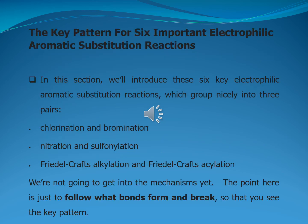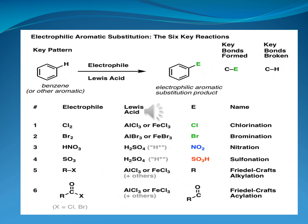Let's see the key pattern for six important electrophilic aromatic substitution reactions. We will introduce these six key EAS reactions, which group nicely into three pairs: chlorination and bromination, nitration and sulfonation, and Friedel-Crafts alkylation and Friedel-Crafts acylation. We are not going to get into the mechanism here yet — the point is just to follow what bonds form and break, so that you see the key pattern of these reactions.